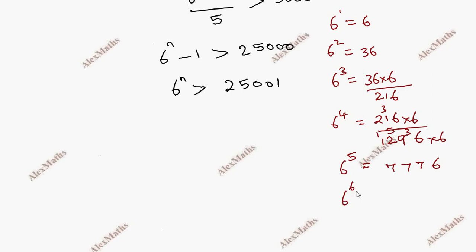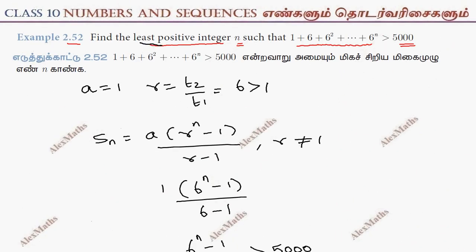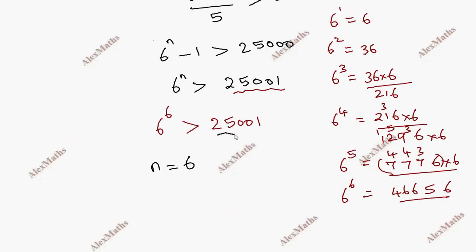Since 6 power 5 exceeds 25000, the n value equals 6. This is the least positive integer such that the condition is satisfied.